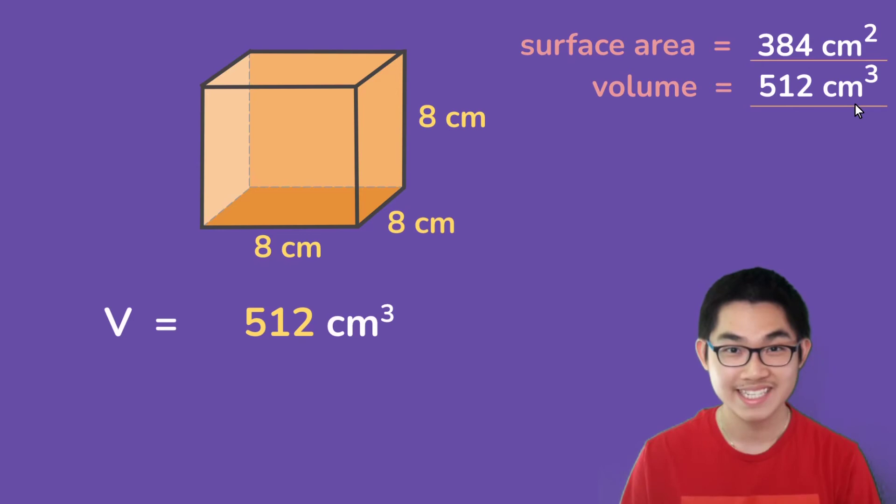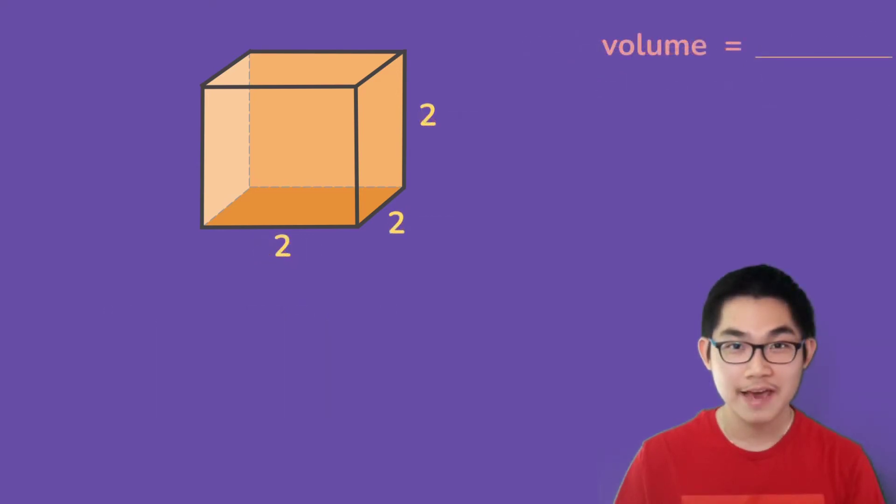If we have a cube with the side of two for each, then the volume is two to the power of three, which is eight.